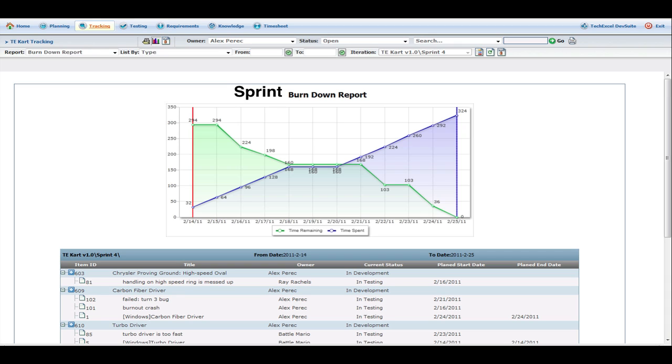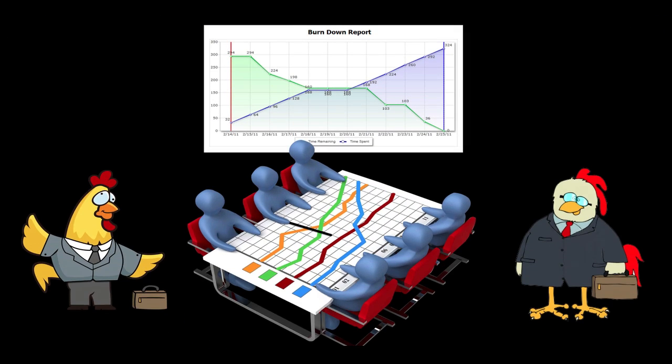With the sprint burndown, we start with our total task estimates, and as work is completed, we lower those estimates until they hit zero. This gives us our burndown line. Within a few days of the sprint starting, we can check the slope of our burndown line to gauge our velocity and estimate when all the tasks will be completed. The sprint burndown is generally used internally throughout the sprint and should be displayed somewhere prominent that all team members and stakeholders can see.